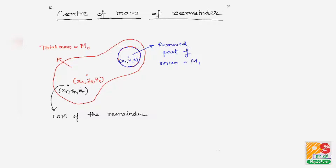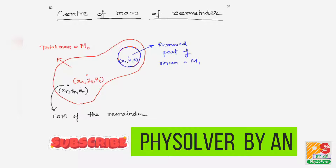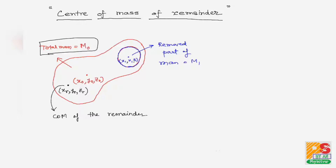Hello students. In this video we will learn about how to find the center of mass of a remainder. The red body has a total mass of m0 and the position of its center of mass is x0, y0, and z0.